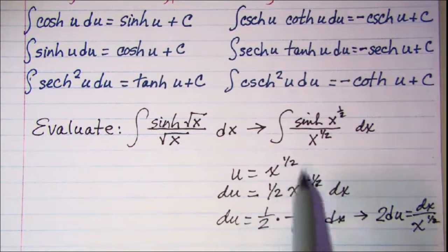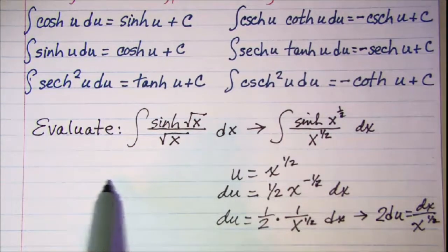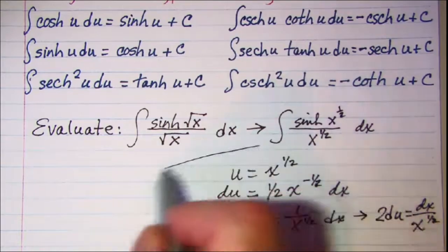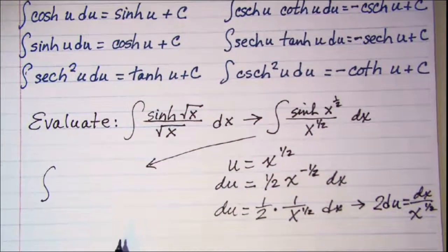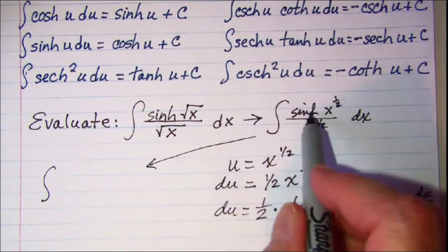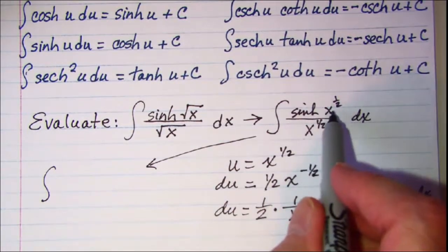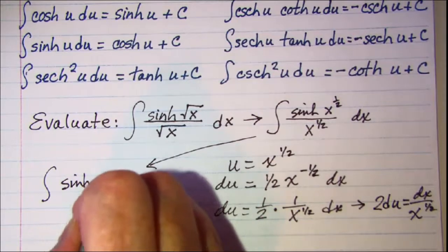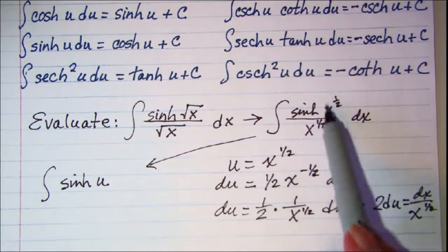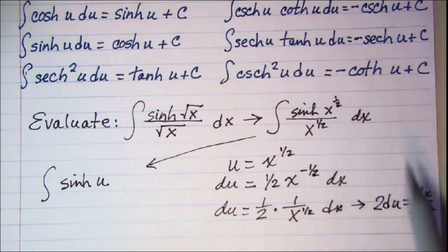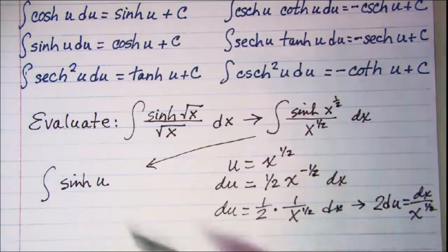Now let's do our substituting. We can put that over here. With u substitution, then I have the integral of hyperbolic sine u. And then in place of the one over x to the one-half dx, I'm going to put in a 2 du.